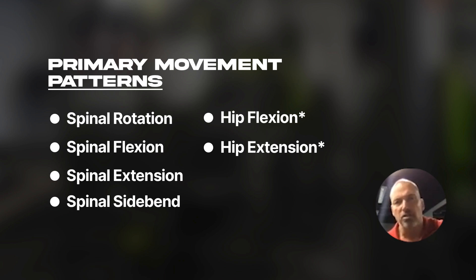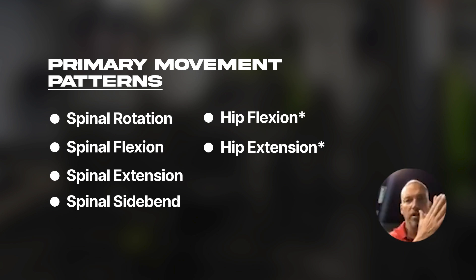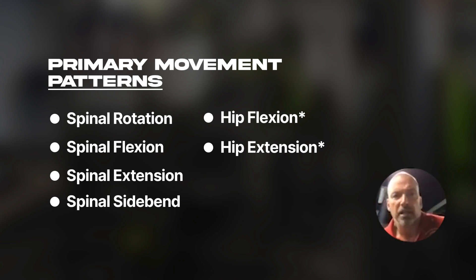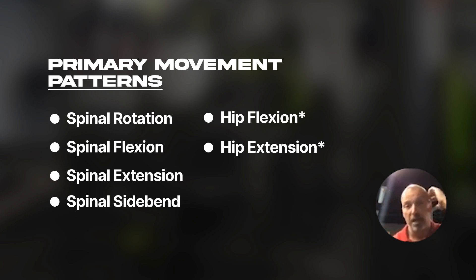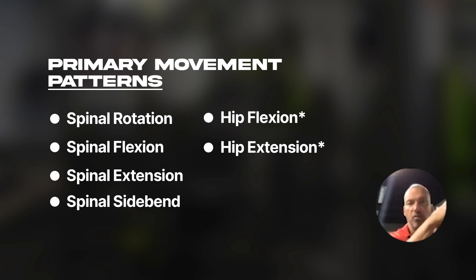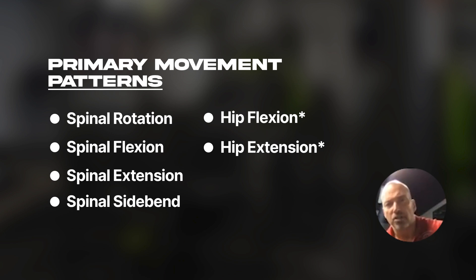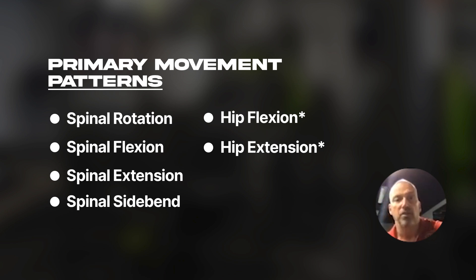In the lumbar spine, based on the structure and the articular processes that line up against one another, we have very limited amounts of motion. But as you move up through the thoracic and into the cervical spine, those articular processes are more horizontal, which allows for significant amounts of range of motion. So the structure dictates how much motion you can have at each joint, and the function of the muscles dictates whether or not you can move through those ranges.